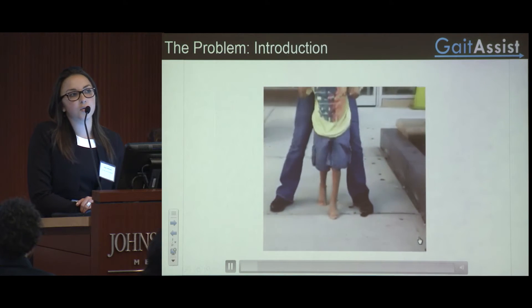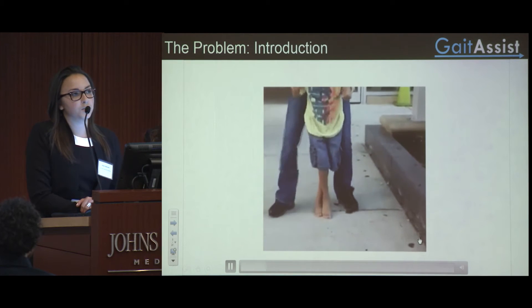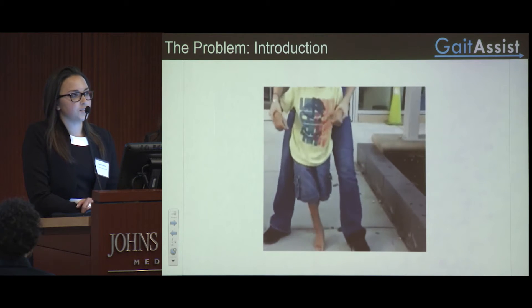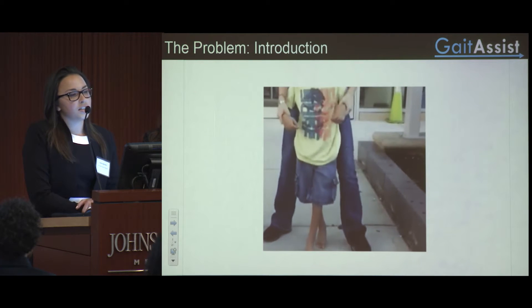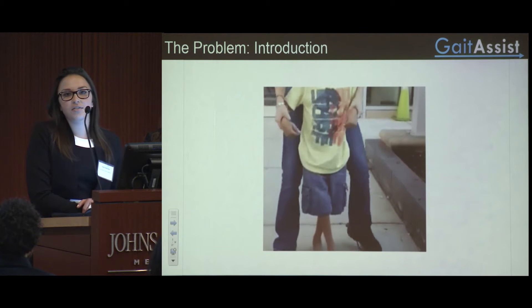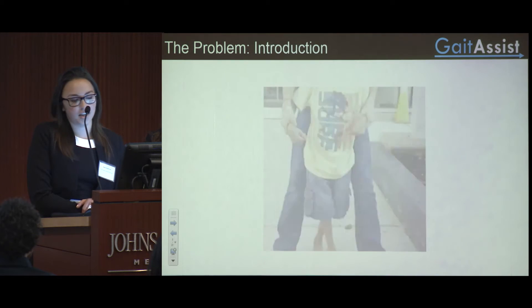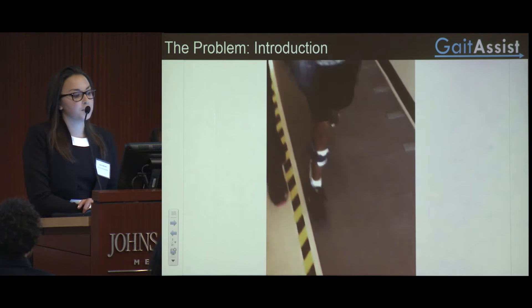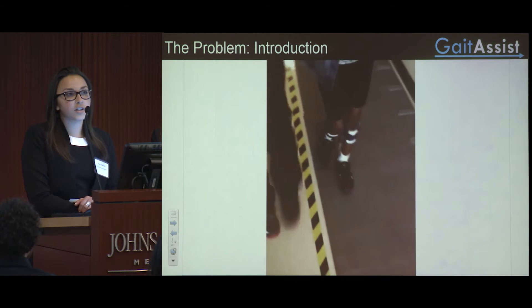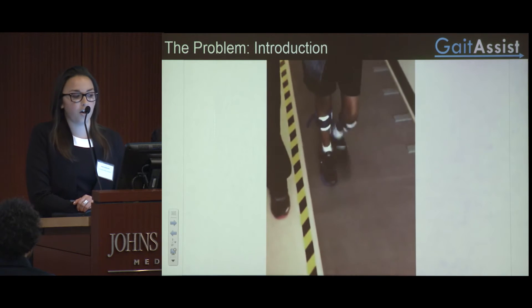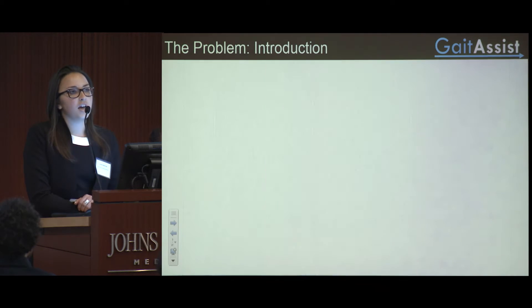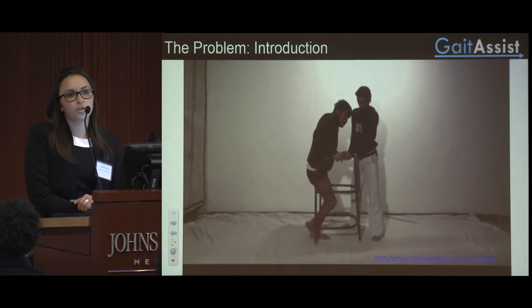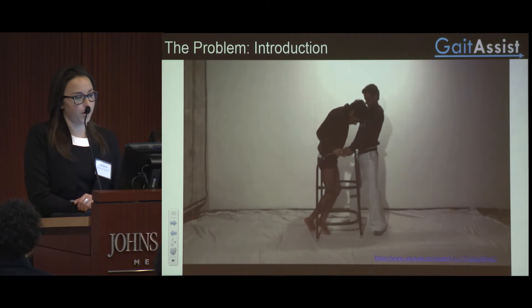Scissor gait is one of the most common gait disorders associated with cerebral palsy. As you can see from this video, scissor gait presents as a crossing of the legs while walking. As a patient attempts to walk, their legs provide a barrier which often causes an increase in trips and falls. Additionally, other symptoms such as toe dragging, crouching, and inward rotation occur.